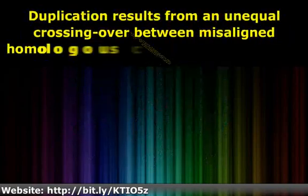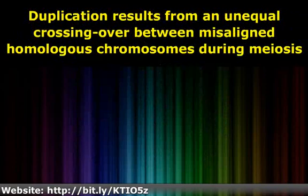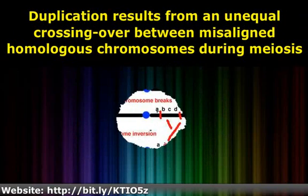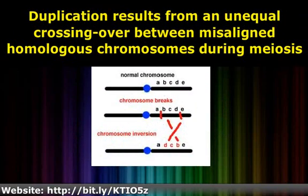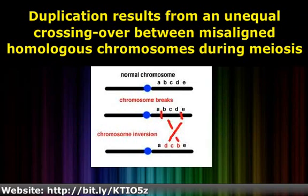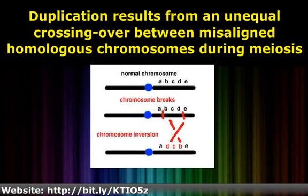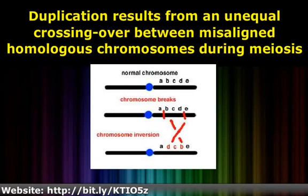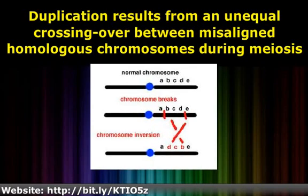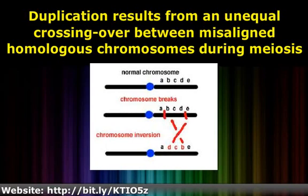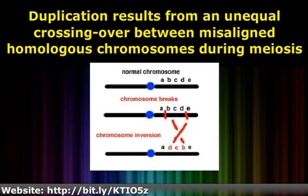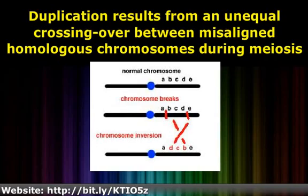Duplication mutation is a type of mutation in which a portion of a genetic material or a chromosome is duplicated or replicated, resulting in multiple copies of that region. Duplication results from an unequal crossing over between misaligned homologous chromosomes during meiosis. It may involve a replication of a portion of DNA, or of an entire chromosome.